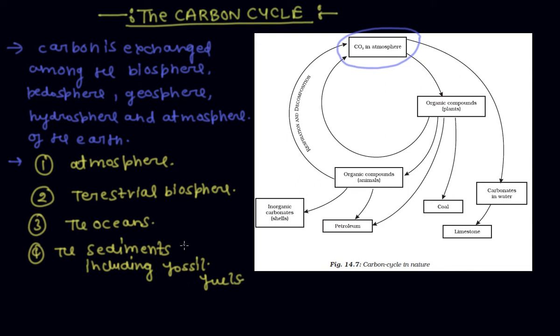These four are the major reservoirs of carbon interconnected by pathways of exchange. Now, CO2 in the atmosphere converts into organic compounds in plants. Then after plants, there are many ways. The first is conversion back into CO2 in the atmosphere.